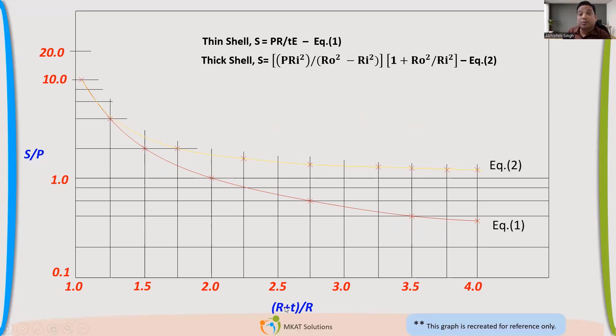So what it is indicating is how the ratio S/P varies with R+T, which is nothing but outside radius divided by inside radius. That will give you the exact thickness, the ratio of the thickness. Outside radius divided by inside radius. Now, if we draw this equation 2, which is Lame's equation, this yellow line indicates the Lame's equation.